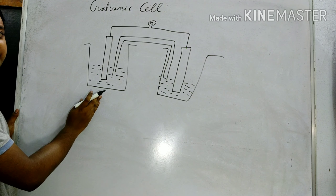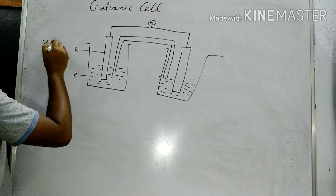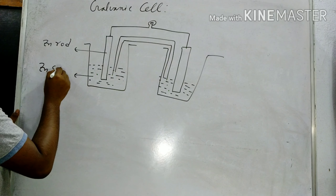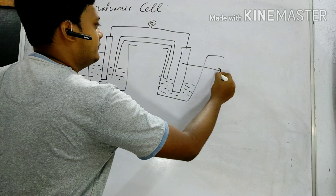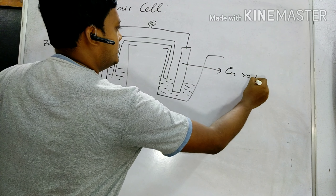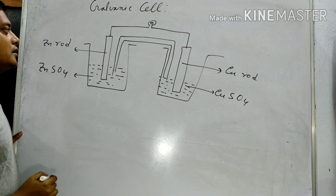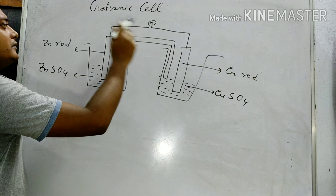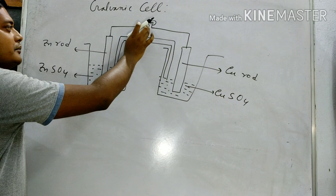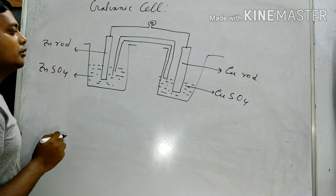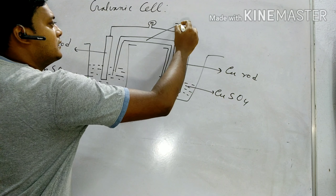In the left-hand side, we place the anode — a zinc rod dipped in ZnSO4 solution. And on the right-hand side, we place the cathode — a copper rod dipped in copper sulfate solution. The anode and cathode are connected by an external wire, and there is a bulb which glows when electric current flows. This U-shaped tube is called a salt bridge.